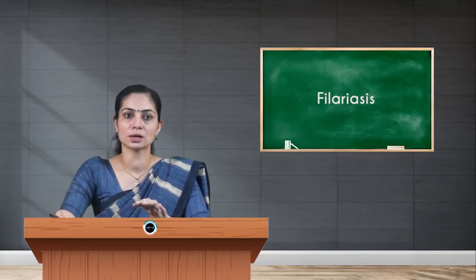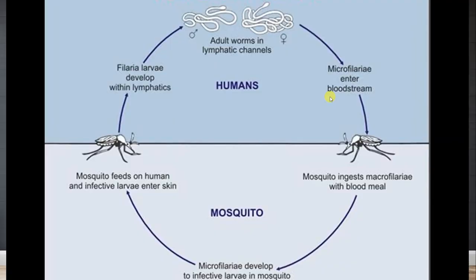To summarize the life cycle: microfilaria enters the bloodstream in the human, which is taken up by the mosquito. Inside the mosquito it becomes the filariform larval stage. When the mosquito bites a human, these filariform larvae enter the human body where they become the adult worm.